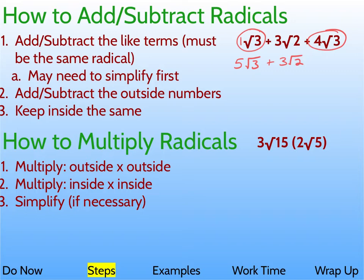If you're multiplying radicals, multiplying radicals is actually really easy. All you have to do is multiply the outside times the outside, and the inside times the inside. And then, if necessary at the end, you simplify.